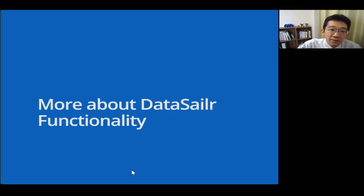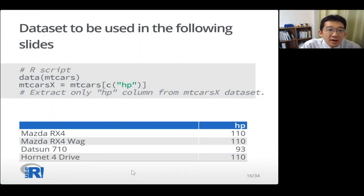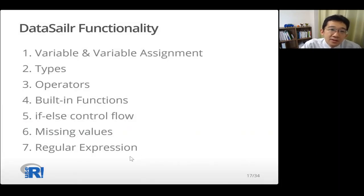I'm going to talk more about Data Sailr functionality. From here, I'm using another data set called mtcarsX. It's based on mtcars dataset and extracting only one column of hp. So this mtcarsX has only one column. And mtcars originally has row names, so mtcarsX also keeps row names. So these are functionalities I'm going to talk: variable, variable assignment, types, operators, built-in functions, if-else control flow, missing values, regular expressions.